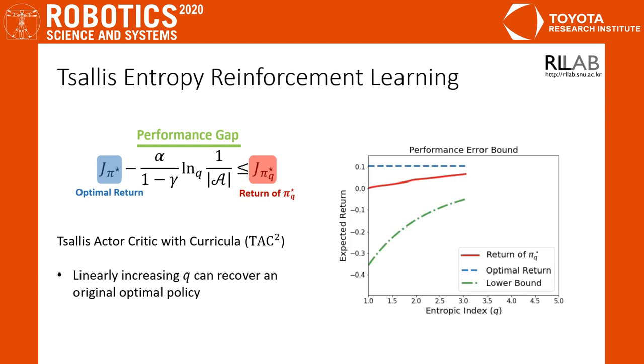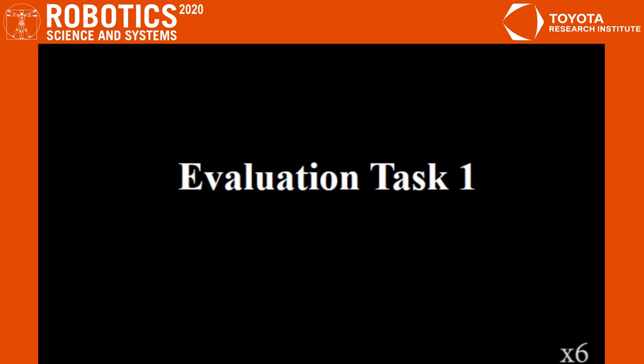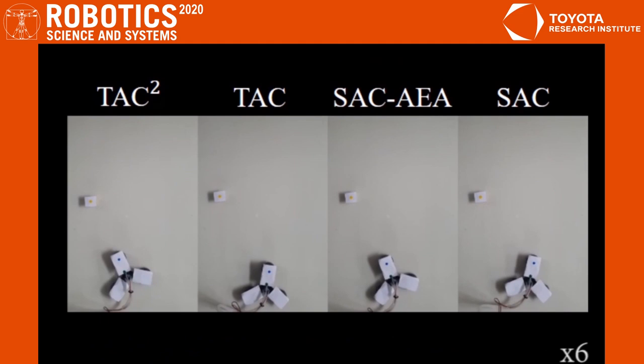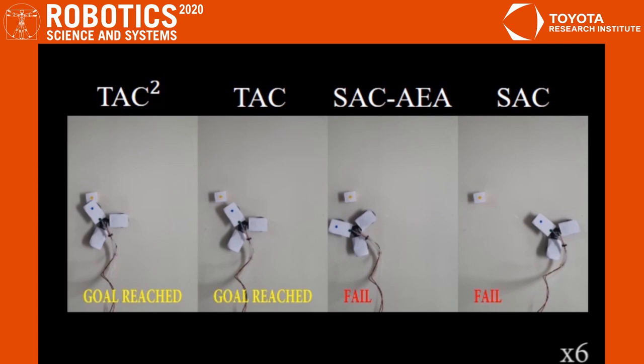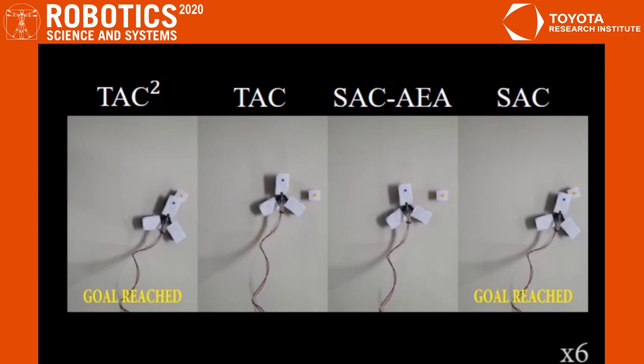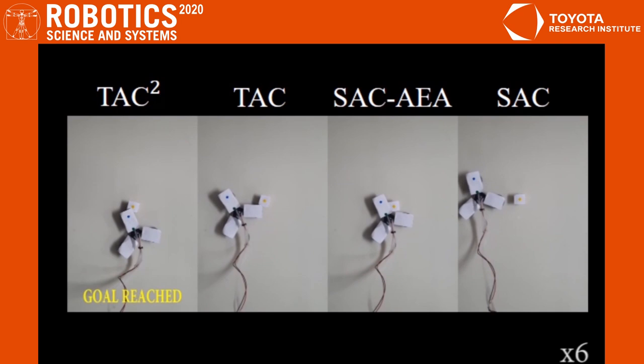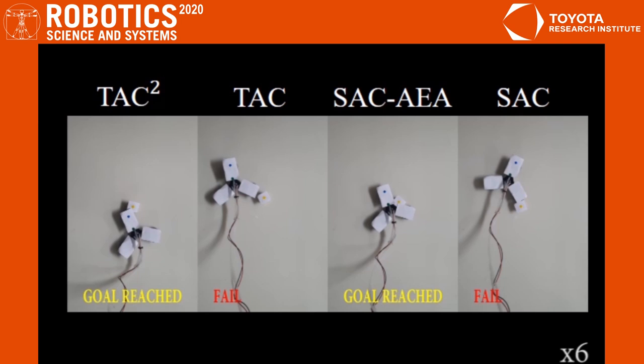Finally, we demonstrate the proposed method on the soft mobile robot by learning a feedback controller, and compare it with other existing exploration methods. This video shows the performance of trained controllers when the same number of data are given. The yellow point is the target point, and TAC² reaches the target point more precisely than other methods. Thus, TAC² outperforms other methods. Consequently, it theoretically and empirically shows that Tsallis entropy can achieve efficient exploration.